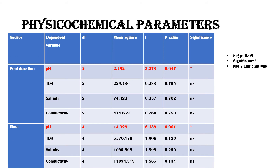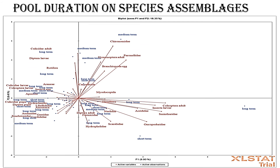Physical-chemical parameters were not really affected by either pool duration or time, with the exception of pH. However, it should be noted that pH is highly variable and is affected by many factors — it can change even within the space of a day — so that should be noted when interpreting pH as an independent value.